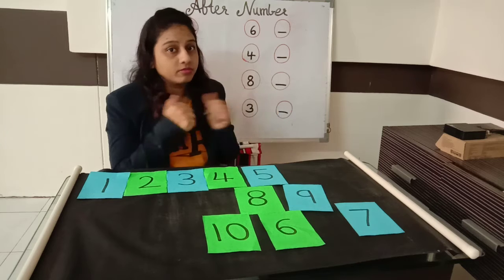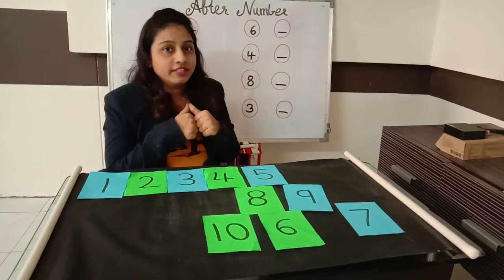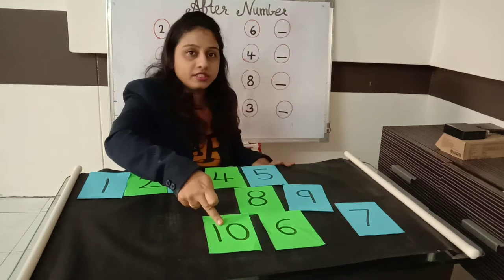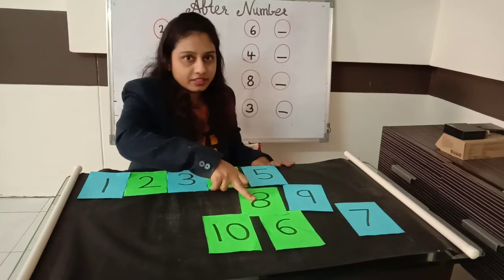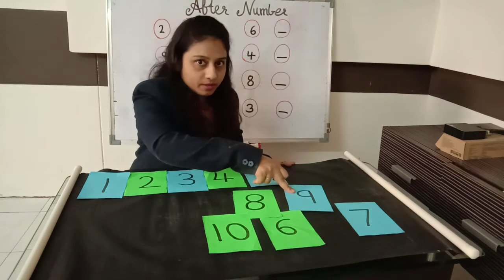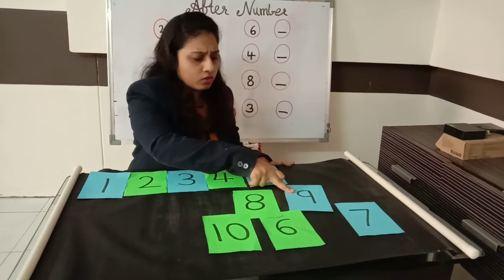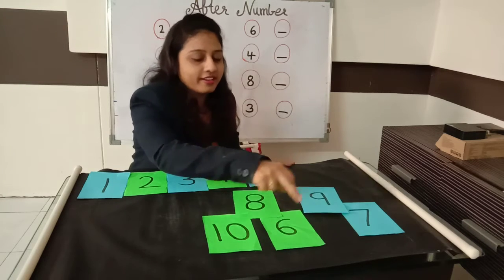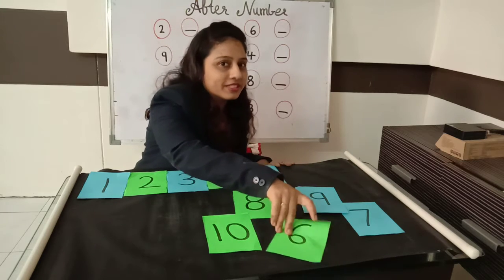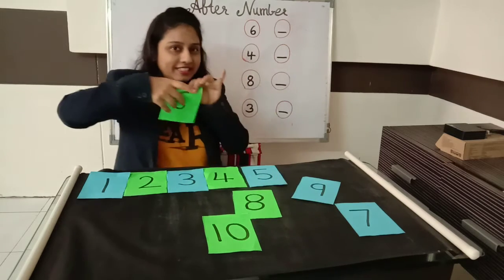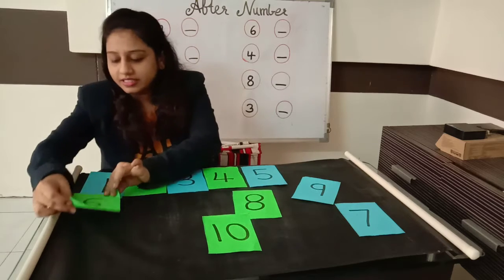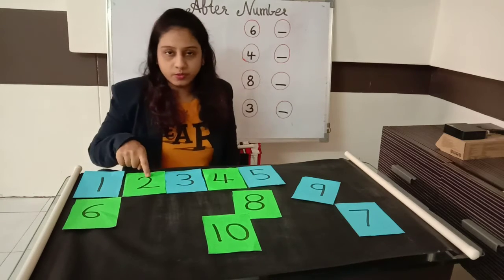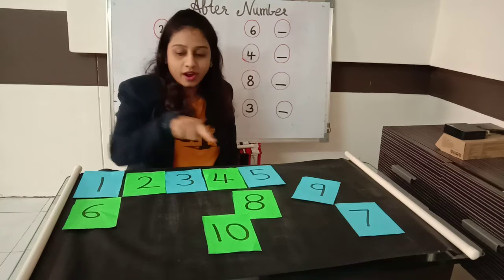And now what comes after 5? 6 number. So where is number 6? Is this 6? No. Is this 6? No. Is this number 6? No. It just looks like 6, but it is not 6 — it is number 9. And this is number 6. Now see: 1, 2, 3, 4, 5, 6.